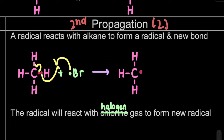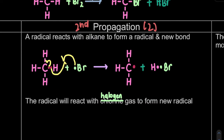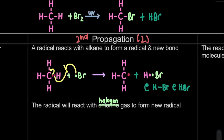What happens to the hydrogen bromide? It will form a new product. We get hydrogen with one electron and bromine with one electron - you could write it as H-Br or just HBr. That is the first step for propagation, where we form our byproduct.